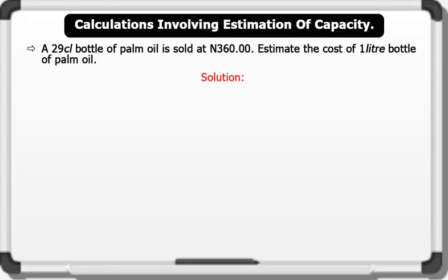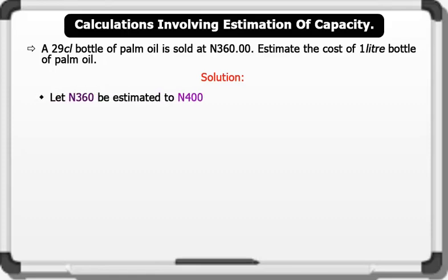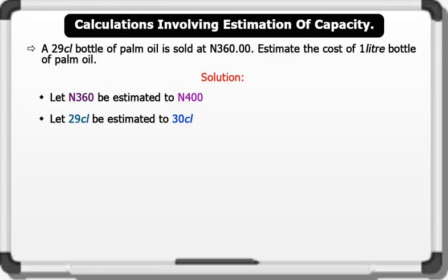Solution. Following the general rule of estimation, let 360 Naira be estimated to 400 Naira. Let 29 centiliters be estimated to 30 centiliters. Note that 1 liter equals 100 centiliters.